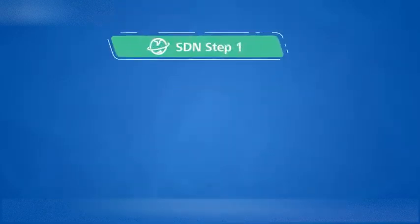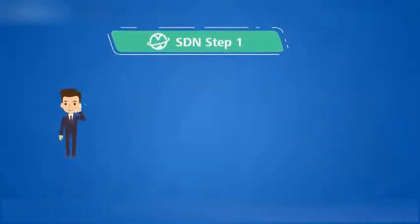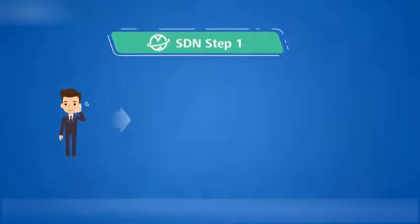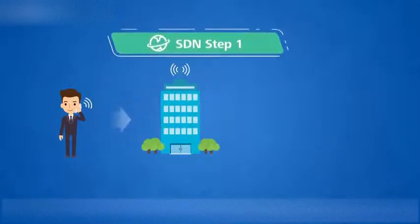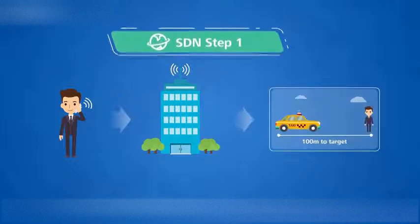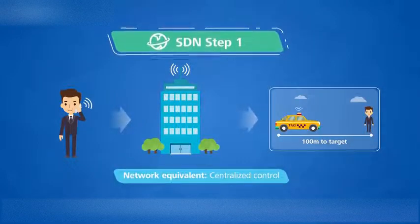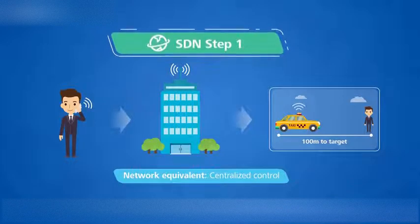Consider calling a cab by telephone. You make a reservation, and the taxi company dispatches a nearby cab to proceed to your location. This is the first step towards SDN. The taxi company, like the network controller, centralizes scheduling.